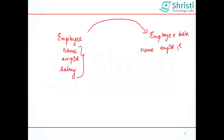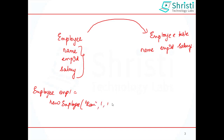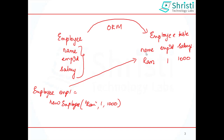The columns will be name, employee ID, and salary. When you want to save an employee object — say, Employee emp1 = new Employee, with a parameterized constructor taking name, ID, and salary — this employee object will be converted into a row in the database table, where name will be RAM, employee ID will be 1, and salary will be 1000. So ORM is a technique which helps to convert your Java class into a database table, instance variables into columns, and each object into a row.